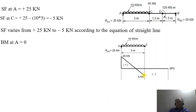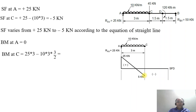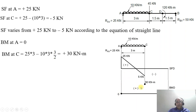What will be the bending moment at points A and C? BM at A equals 0, and BM at C equals 25 into 3 minus 10 into 3 into 3 by 2, which gives plus 30 kilonewton meter. Since the SF is changing sign from positive to negative, the maximum bending moment occurs at that point, so we identify but do not yet plot that exact point.